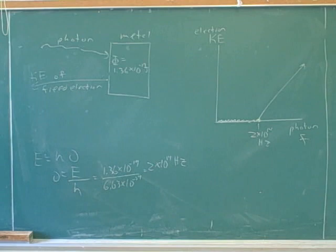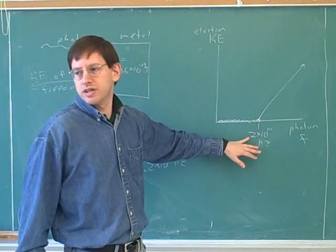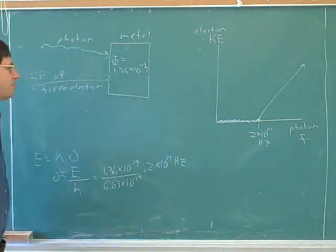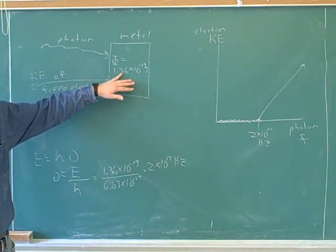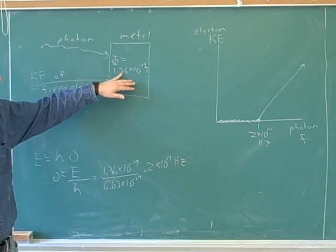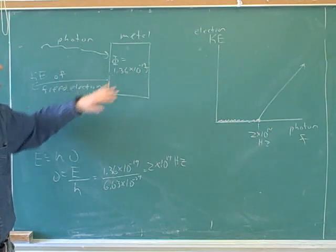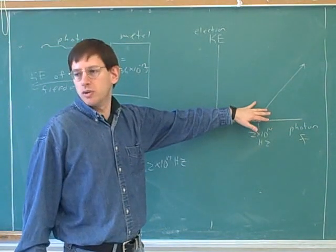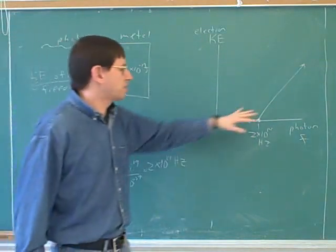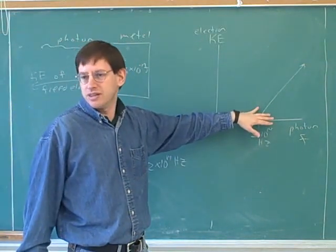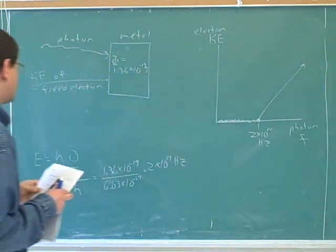But now, let's say that we have a frequency that is bigger than 2 times 10 to the 14. Well, then it's going to have more energy than 1.36 times 10 to the negative 19. Well, it's going to use up 1.36 times 10 to the negative 19 energy, freeing the electron, and whatever is left over is going to go into this kinetic energy. The more energy that we started with, the more that's going to be left over at the end for this kinetic energy. That's why this line becomes upward sloping.